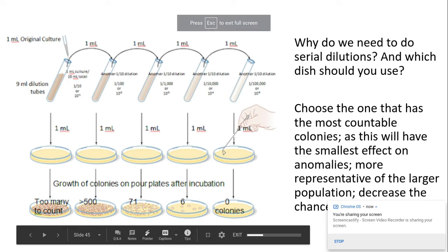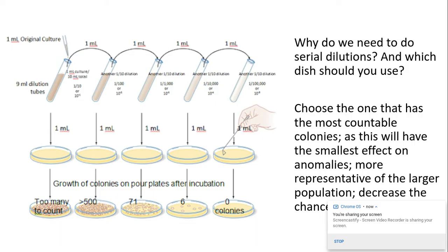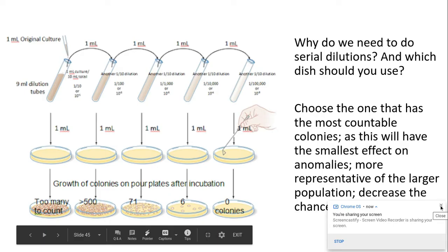This is part two of lesson objective G from the OCR specification in biotechnology and cloning. We're carrying on looking at serial dilutions. Now it's really important we know why we do a serial dilution.